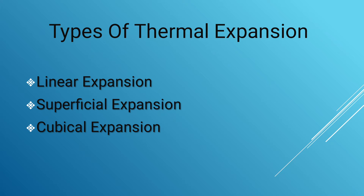There are three different types of thermal expansion. The first one is called linear expansion, the second is superficial expansion, and the last one is cubical expansion. Linear expansion is the increase in the length of a substance when heated. Superficial expansion is an increase in the area of a substance. Cubical expansion is the increase in the volume of a substance when heated.